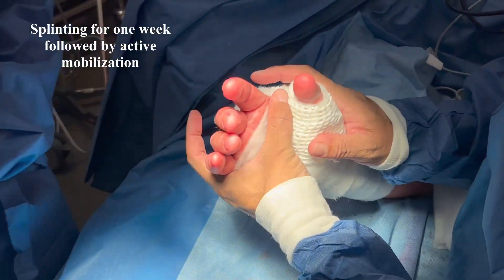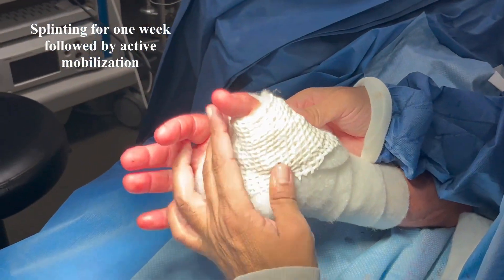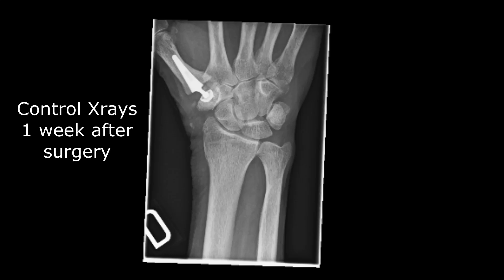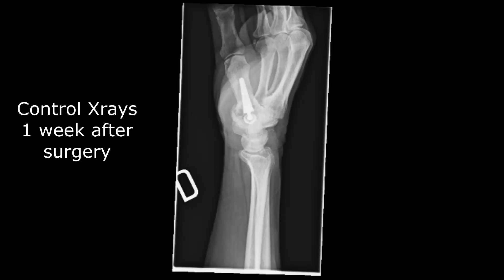A splint is applied for a week to control for pain and swelling. X-rays are necessary to check the position of the implant.